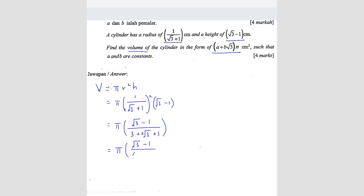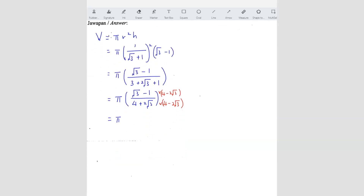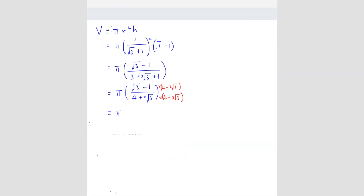So now we have (√3 − 1) over (4 + 2√3). To simplify this, we multiply by the conjugate: (4 − 2√3) on both top and bottom. Let me scroll down for space. We get π, and on the top we expand to get 4√3 minus 2 times 3 which is 6.